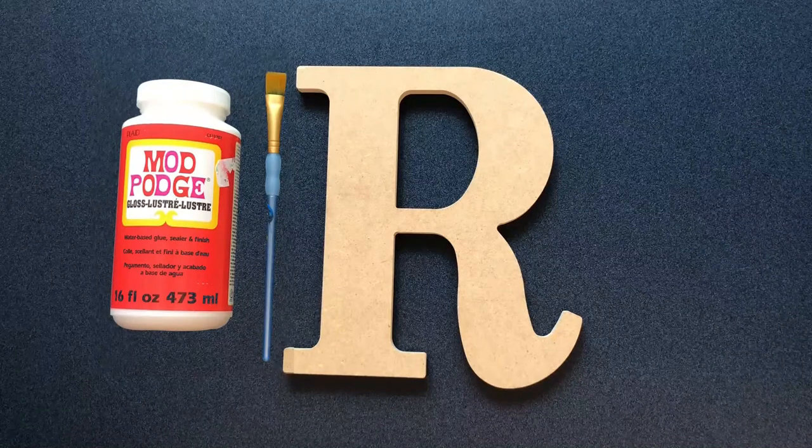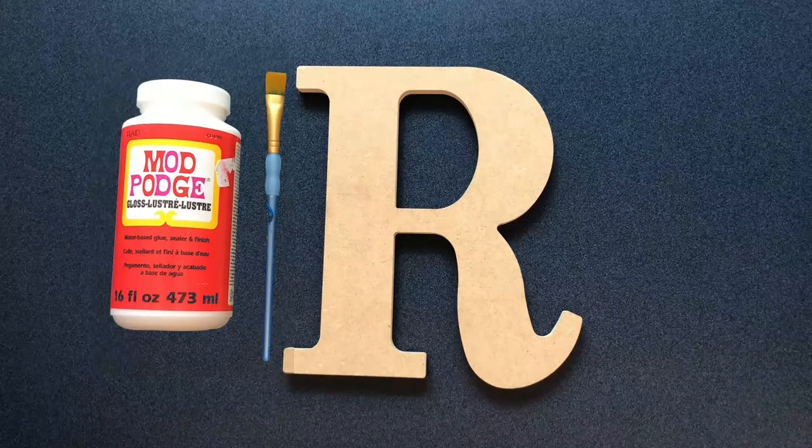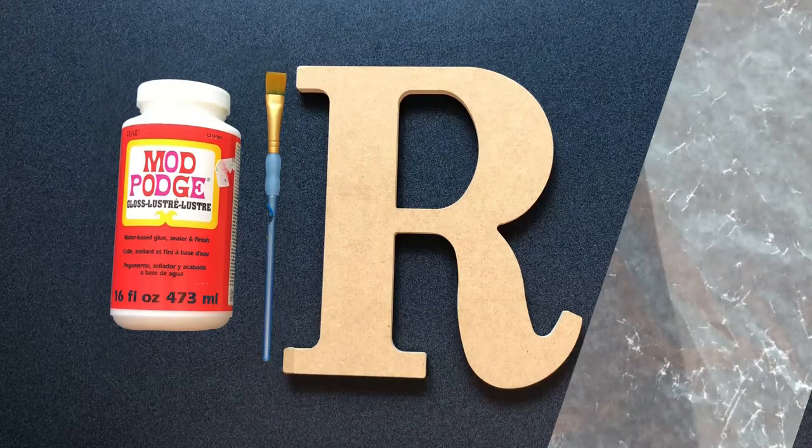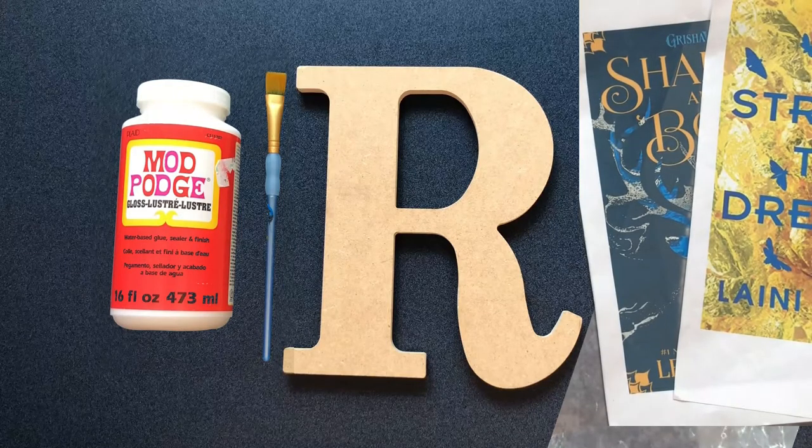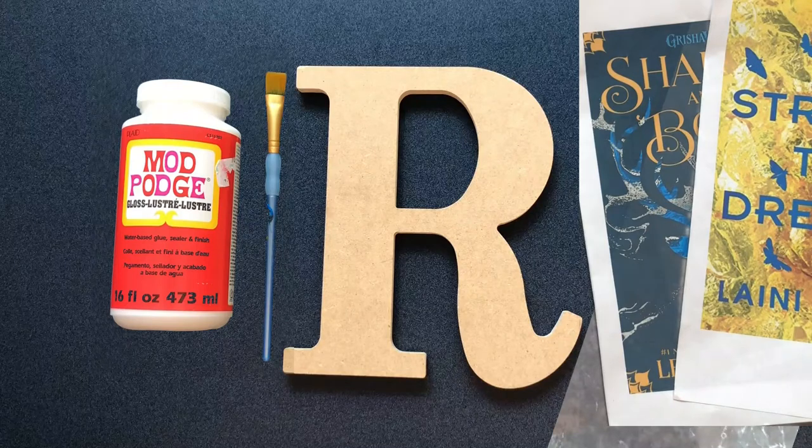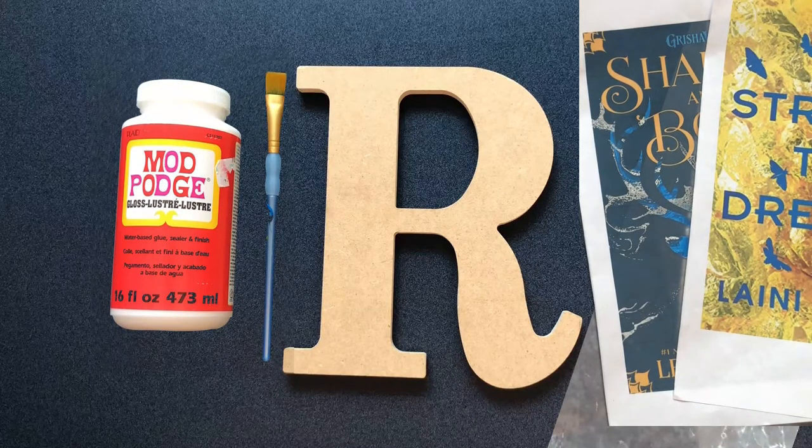Next you'll need Mod Podge and a brush to apply it. You'll need a working surface, probably waxed paper. Then you'll need printouts of the book covers on regular paper. You'll need multiple covers for each letter.